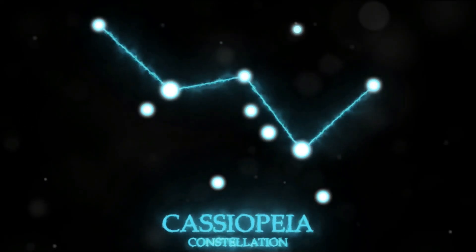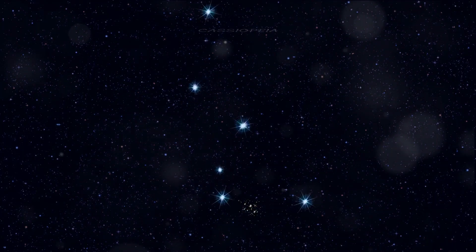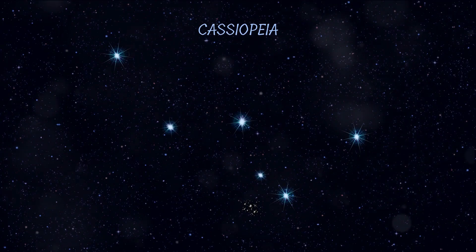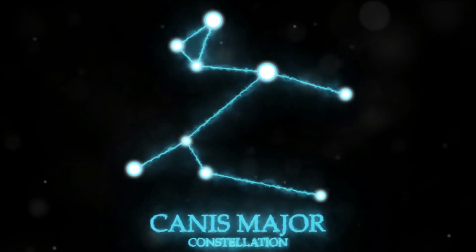Next we have Ursa Major, the Great Bear. It's one of the largest constellations and includes the Big Dipper, a group of seven bright stars. Its name hails from a Greek myth where a beautiful maiden named Callisto was turned into a bear, and then placed in the sky by Zeus. Now let's gallop to Pegasus, the winged horse.